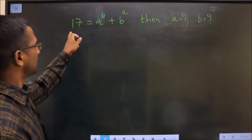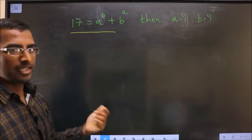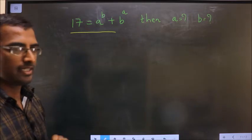Given that 17 equals a^b plus b^a, then you need to find the values of a and b. How do we find it? See here.